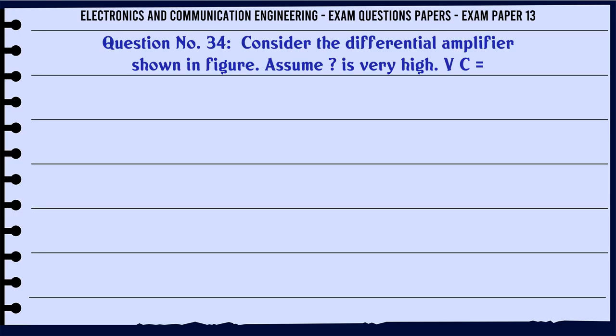Consider the differential amplifier shown in figure. Assume beta is very high. What is VC? A: 5V, B: 10V, C: 15V, D: 30V. The correct answer is 10V.